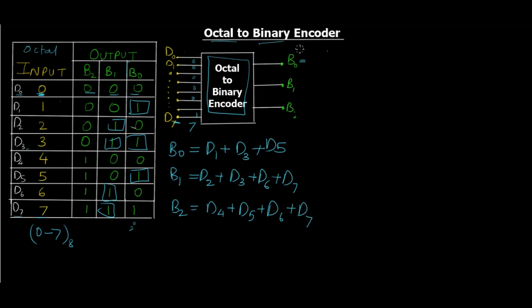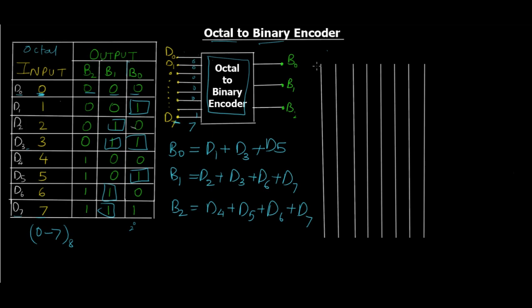Okay, so we've got the expressions now. Let's move on to the circuit diagrams. These are the only things that we need for drawing the circuit diagrams. Let me first draw the input lines. We have eight input lines, so let me draw eight input lines. I've drawn the eight input lines, let's name them starting from D0, D1, D2, D3, D4, D5, D6, and D7.